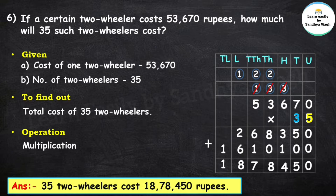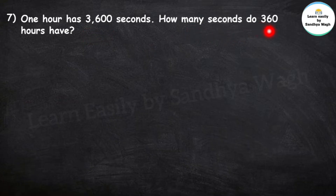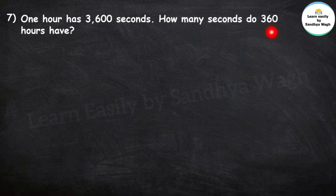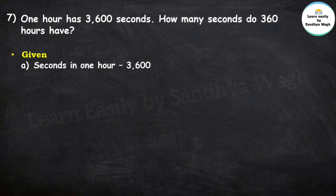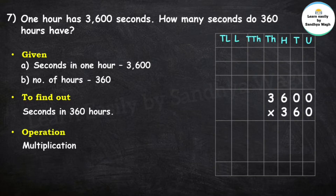Next question: One hour has 3,600 seconds. How many seconds do 360 hours have? Given information: seconds in one hour = 3,600; number of hours = 360. What do we have to find out? We have to find out the seconds in 360 hours. For that we will do multiplication — 3,600 multiplied by 360.